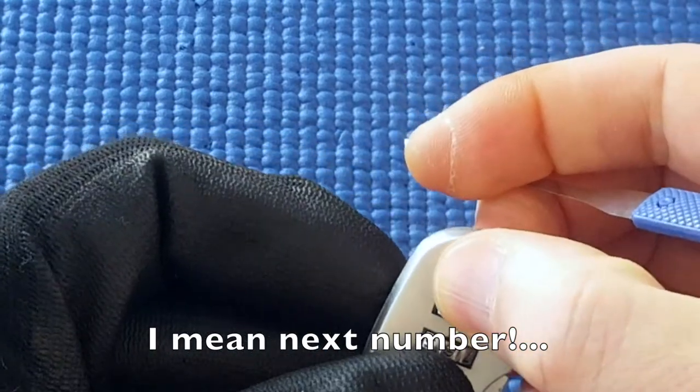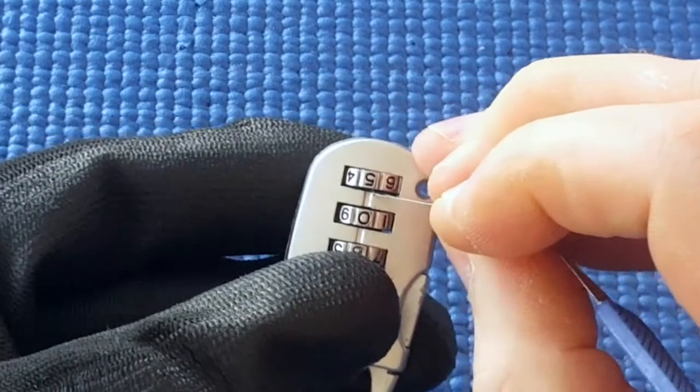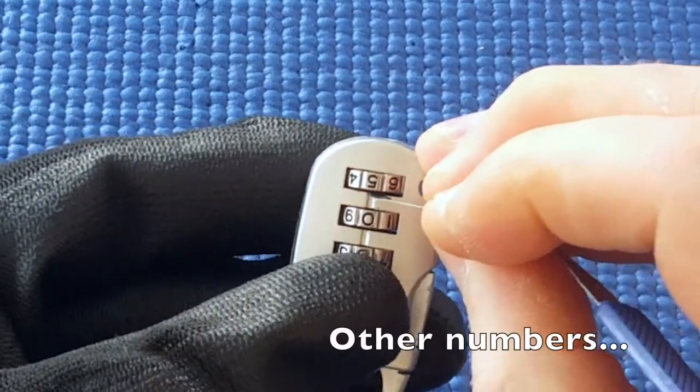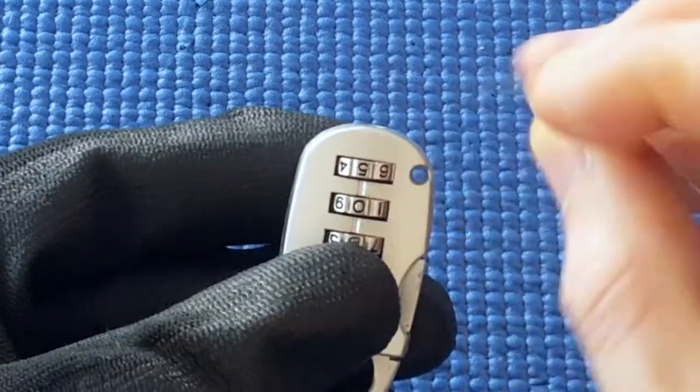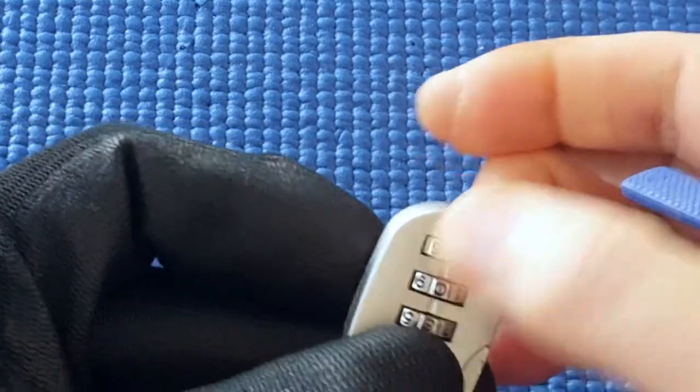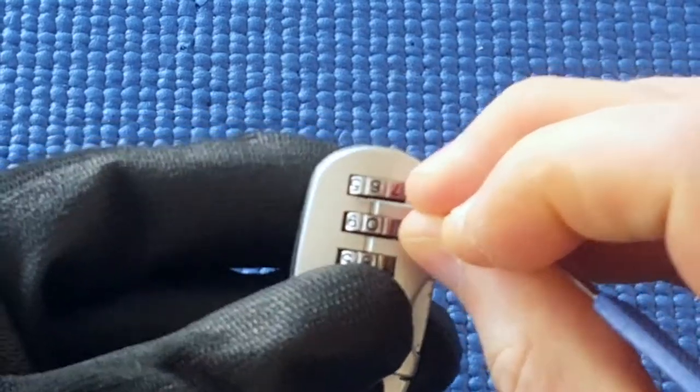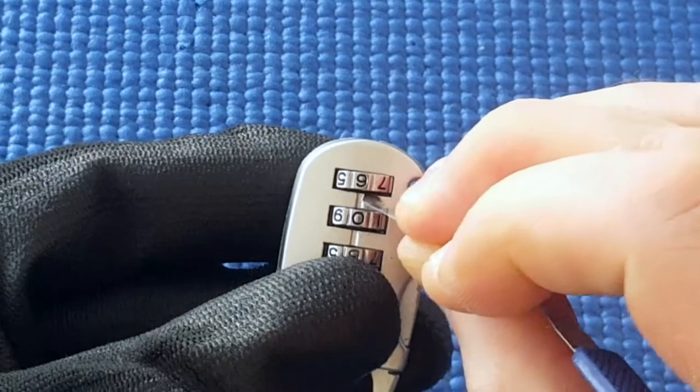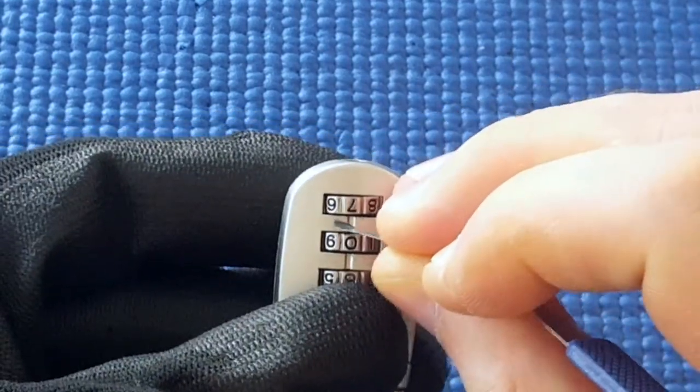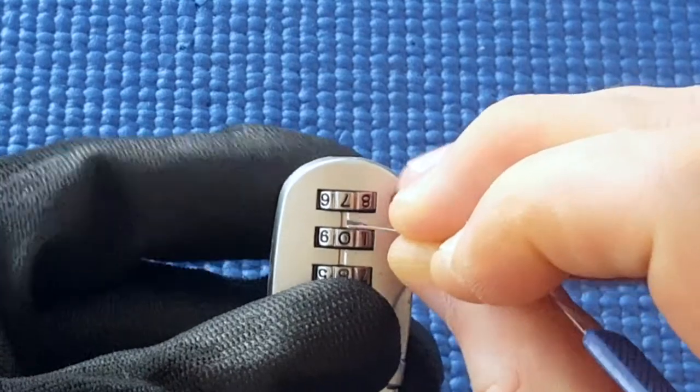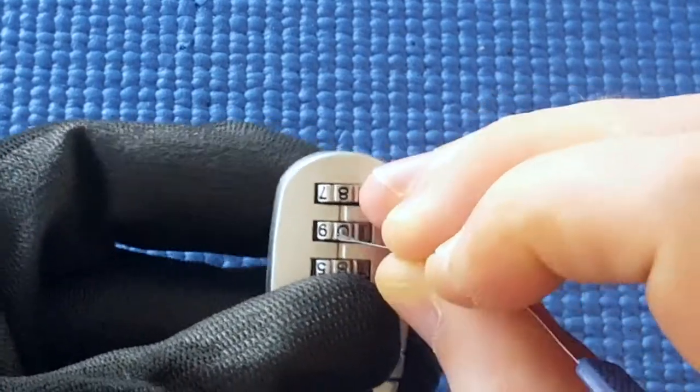But if I try this on other wheels, there's a little bit of a bump just at the edge of five. Next wheel, there's a bump on six, feel a bump on seven, feel a bump on eight.